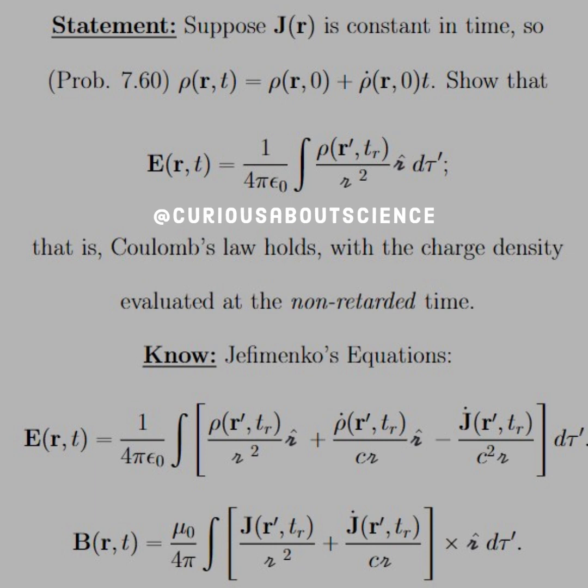So with that, let's suppose that J of R is constant in time, so what we found in chapter 7 with problem 7.60, rho of R and T is equal to rho of R at 0 plus the time derivative of rho at R at 0 times T. Okay, that was kind of the expansion with respect to T, if you will, a Taylor series.